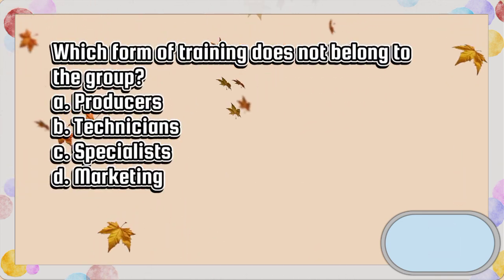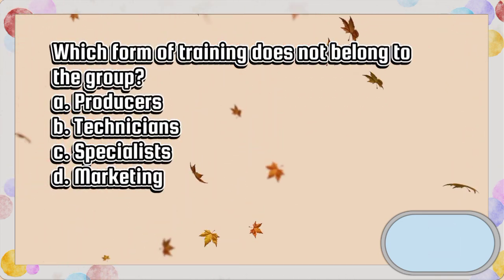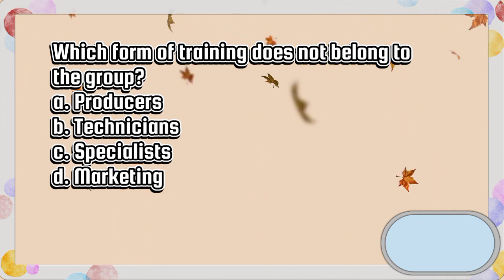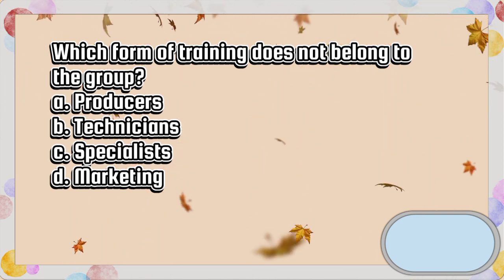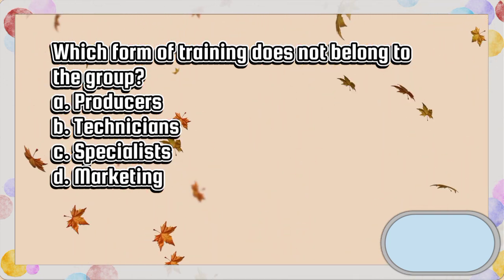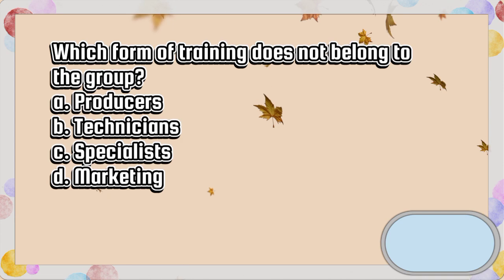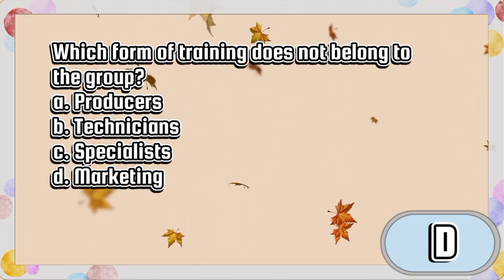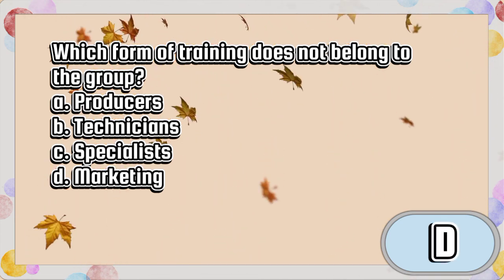Which form of training does not belong to the group? A. Producers, B. Technicians, C. Specialists, D. Marketing. The answer is letter D.